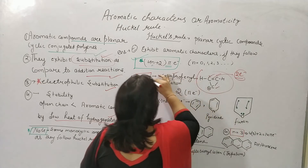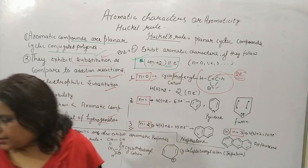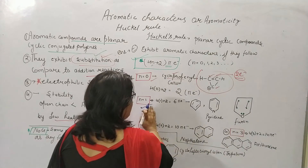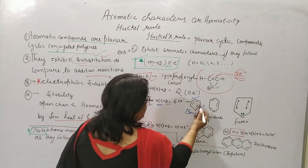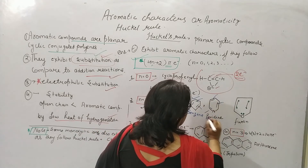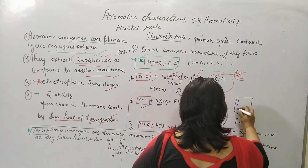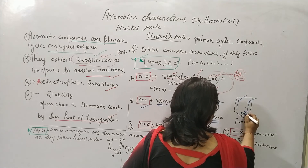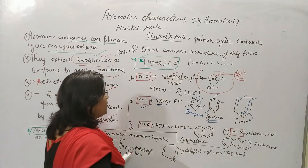For n = 1: 4(1) + 2 = 6 pi electrons. Examples include benzene with 6 pi electrons, pyridine also with 6 pi electrons, and furan. In furan, the ring has 4 pi electrons from double bonds and one lone pair on the oxygen contributes 2 more, giving 6 pi electrons total. So furan shows aromatic character.